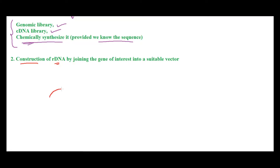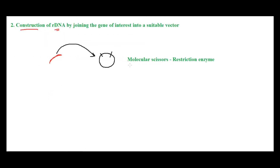We have isolated the gene of interest and we have a vector. We need to insert this gene into the vector. In order to insert this piece of DNA into the vector, we need to cut open the plasmid — digest it — insert the piece of DNA, and then seal it back. That cutting is taken care of by our molecular scissors, which are nothing but restriction enzymes. Restriction enzymes can cut DNA and act as molecular scissors.